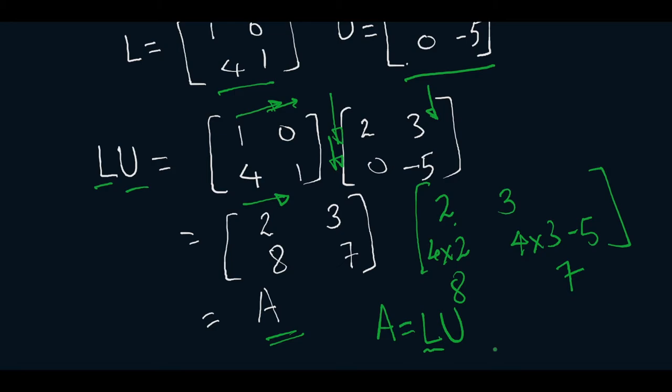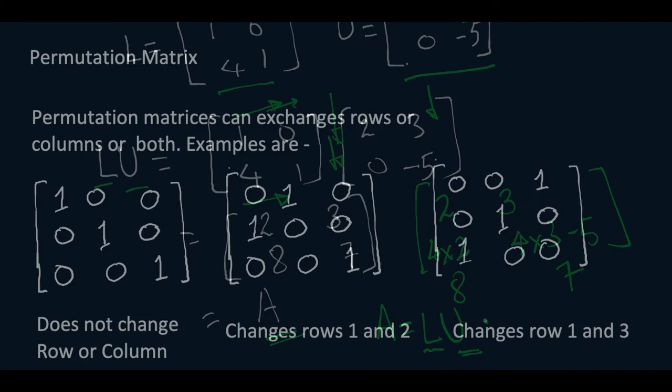So now we know how to transform A into L and U where L is inverse of elimination matrix, also a lower triangular matrix, and U is our upper triangular matrix. Now we will move on to our next topic which is permutation matrix.